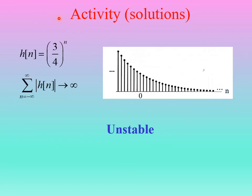Example two: h(n) = (3/4)^n with no step function u(n). It decays to the right, but to the left it blows up, growing larger and larger as n becomes more and more negative. Without even computing the sum, you can see the left side grows without bound and goes to infinity. Therefore this is an unstable system.